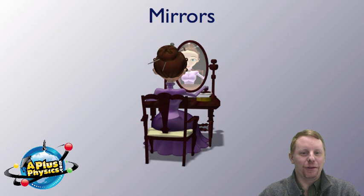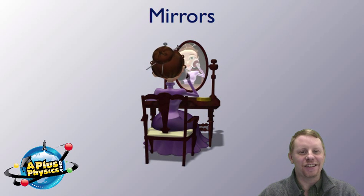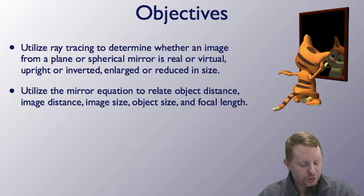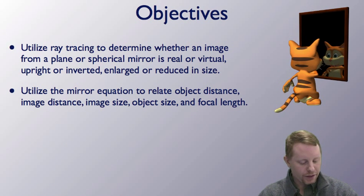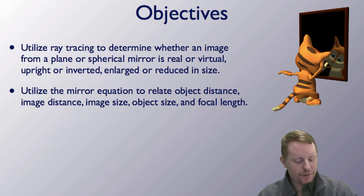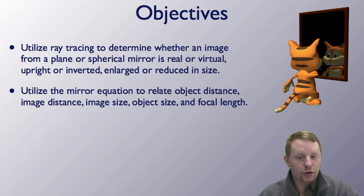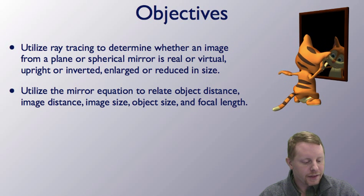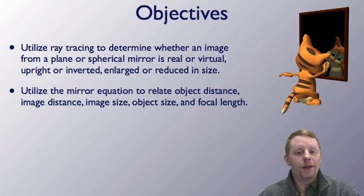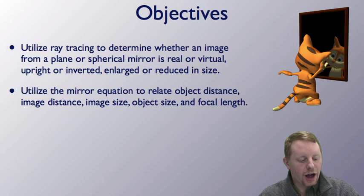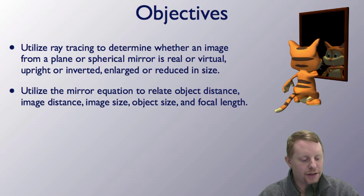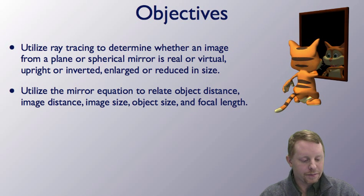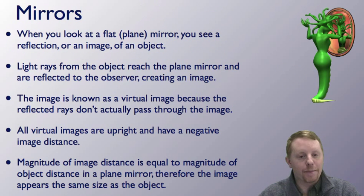Hello everybody, I'm Dan Fullerton, and in today's lesson we're going to talk about mirrors. Our objectives include utilizing ray tracing to determine whether an image from a plane or spherical mirror is real or virtual, upright or inverted, enlarged or reduced in size, and we're also going to utilize the mirror equation to relate object distance, image distance, image size, object size, and focal length. So let's dive right in and talk about mirrors.